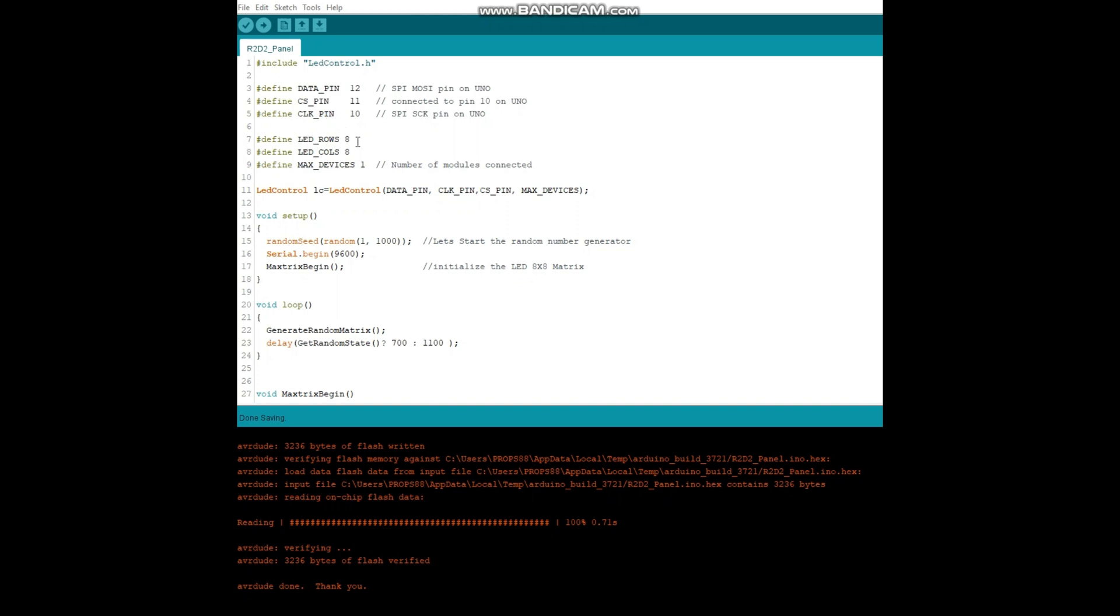Now the matrix 8x8 is eight rows with eight columns. And it's one device. You can have multiple devices if you want to. But in our demo here it's just one device. We initialize the LED control over here.